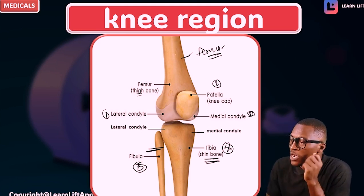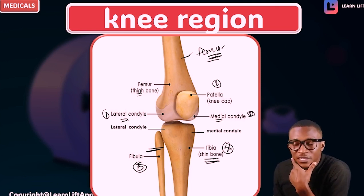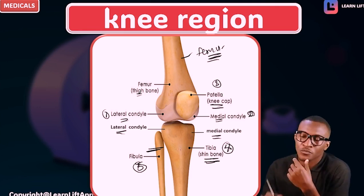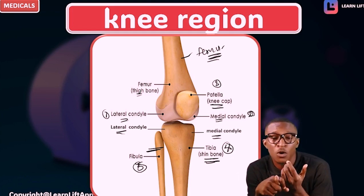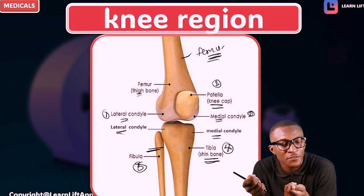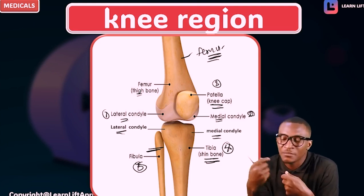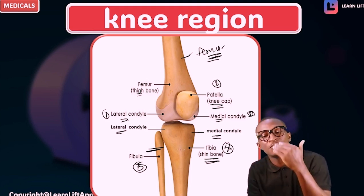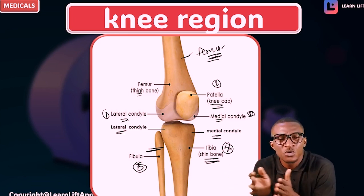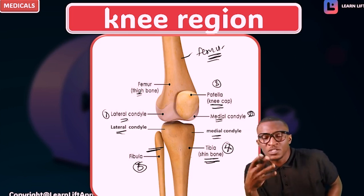Everybody, what forms the knee joint? Number one, we have the femur — specifically the lateral condyle and medial condyle of the distal femur. Number two, the head of the tibia — the lateral condyle and the medial condyle of the tibia. And three, the patella bone. Three major bones form it. Don't forget the things that form the knee region — we'll take more detail as we teach on. This is just the overview.